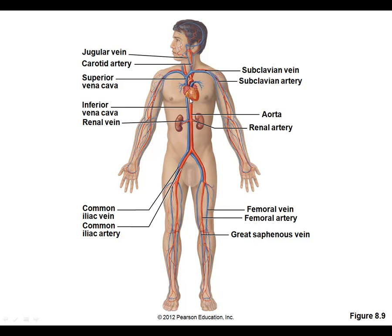The systemic circulation has venous return coming from the superior and inferior vena cava, which end up in the right atrium and from there to the right ventricle. The systemic circulation starts with the aorta from the left ventricle. The left ventricle pumps the blood through the aorta — the ascending end and the aortic arch — and then it splits into different arteries into the systemic circulation, getting smaller and smaller.